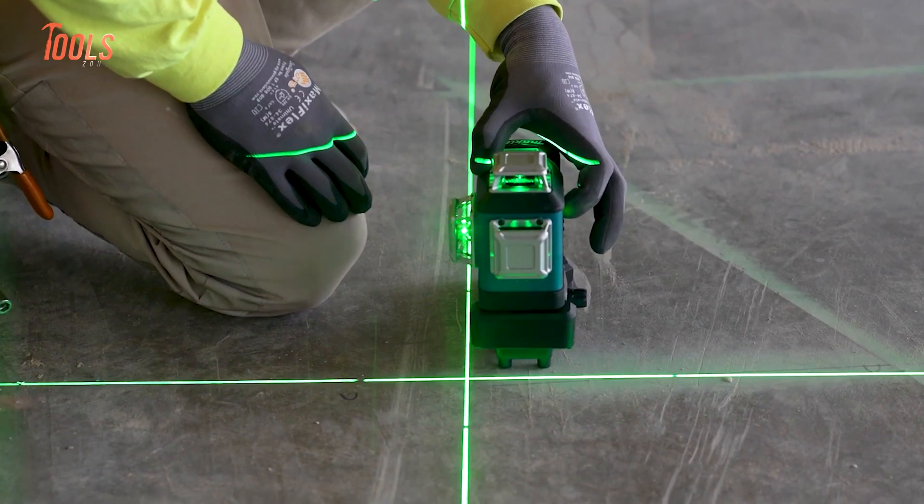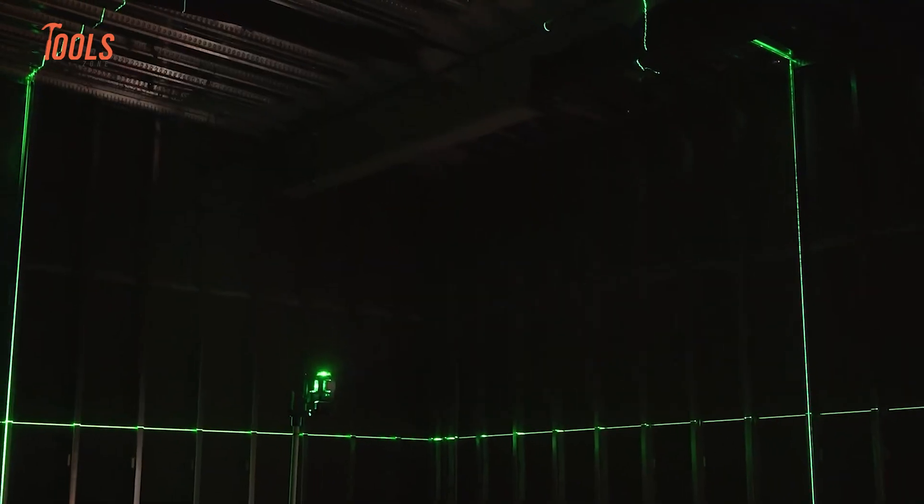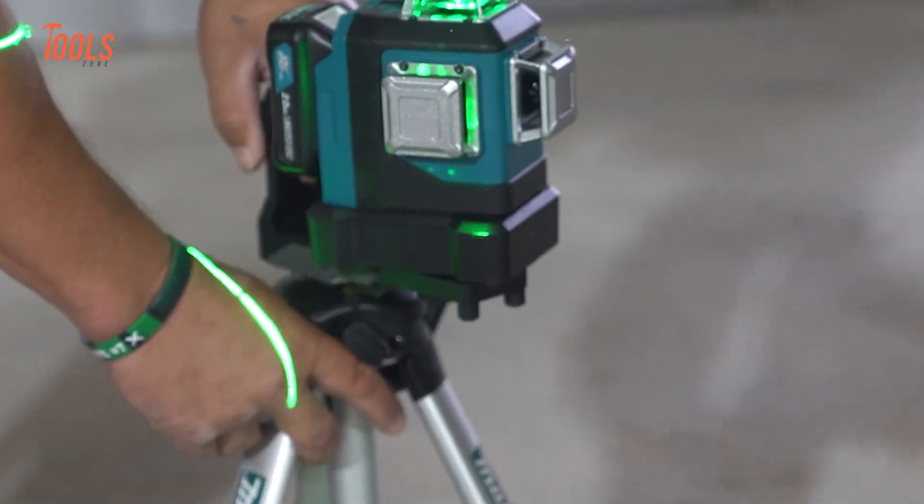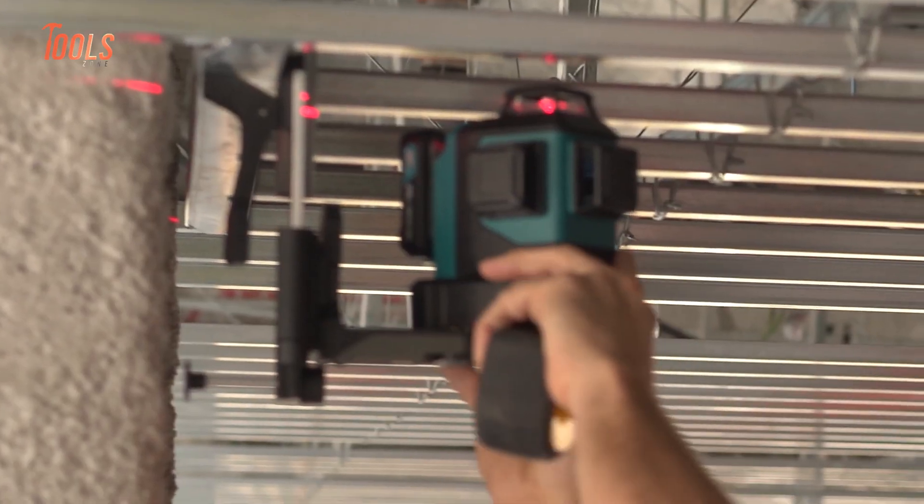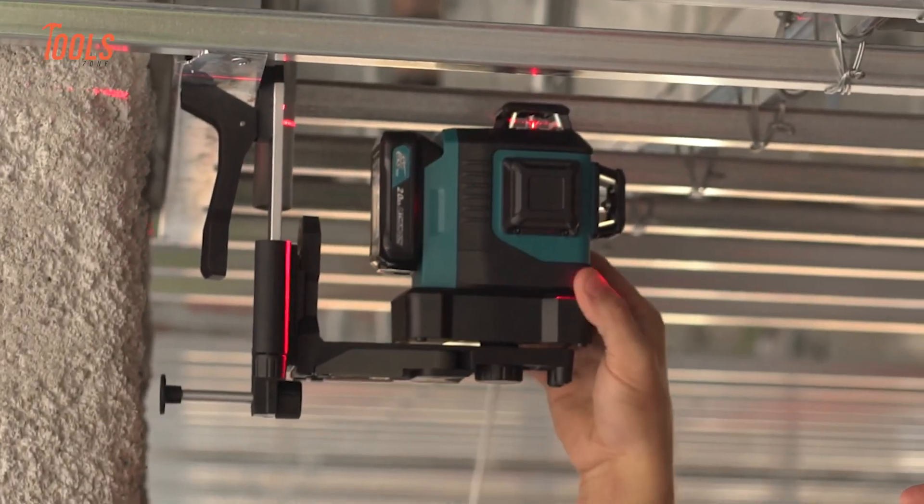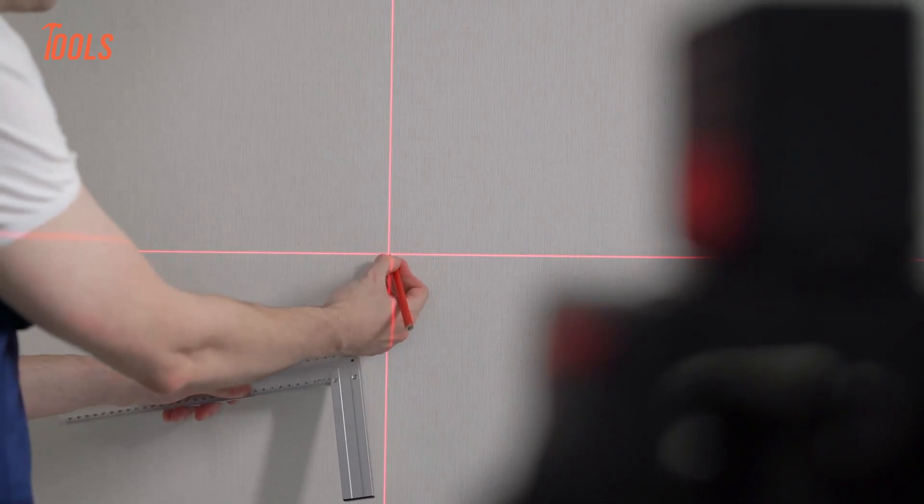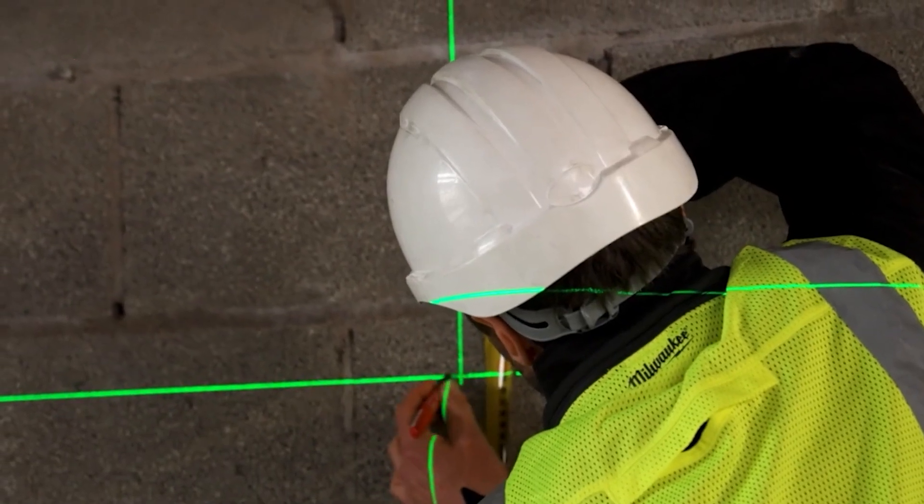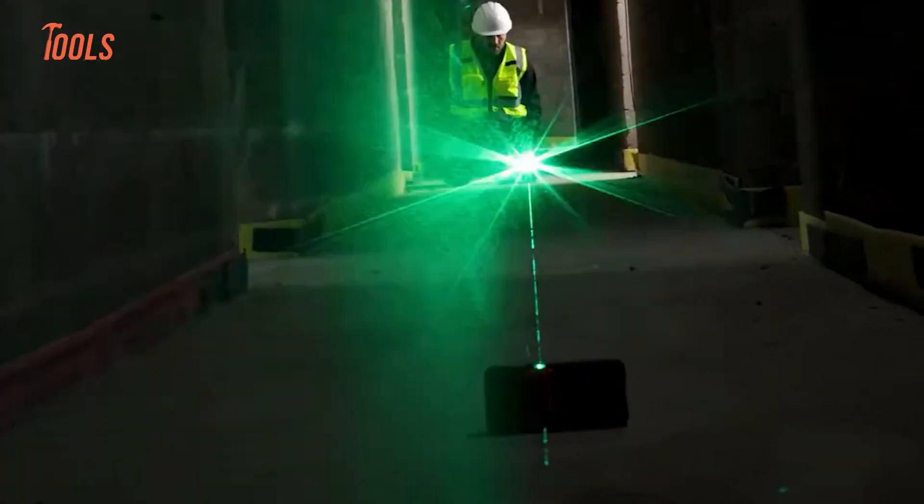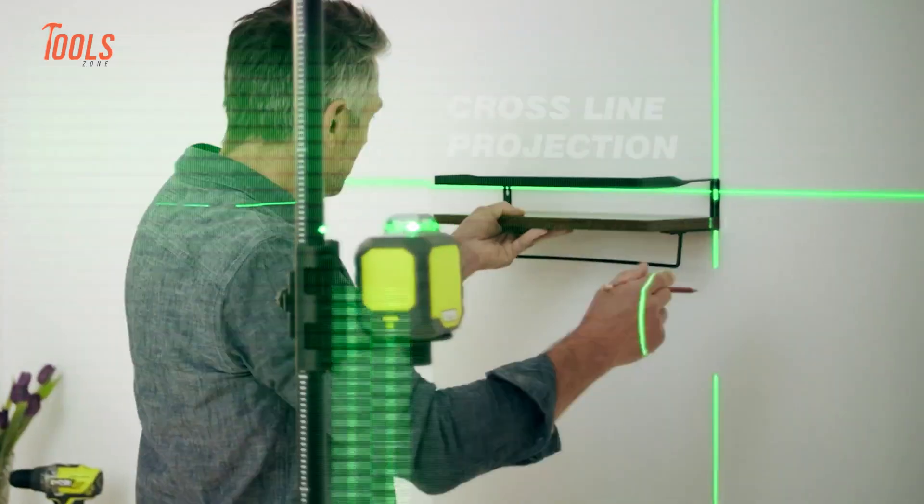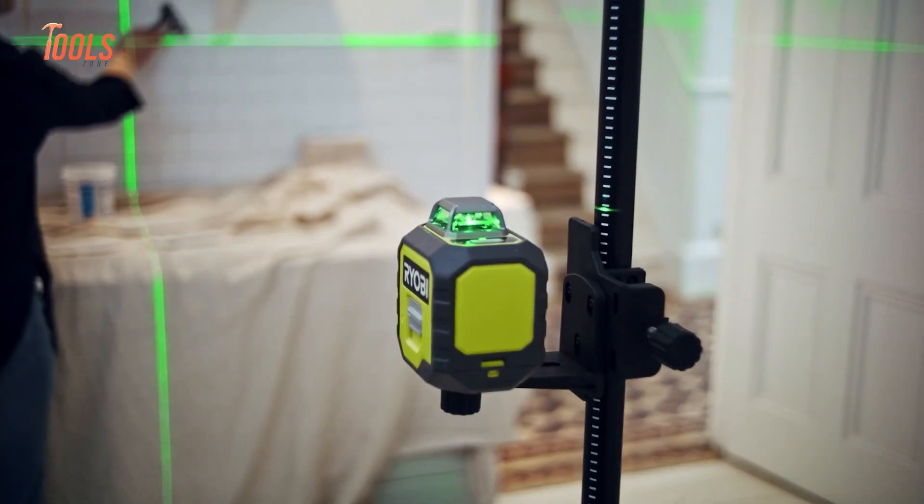However, producing green lasers is more costly, and they consume more power, which means they drain the battery faster. So if you mostly work indoors or only need short-range leveling, a red laser will do the job just fine. But if you often work under bright light or need longer-range visibility, then paying more for a green laser model will definitely make your work easier and faster.